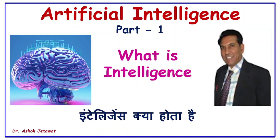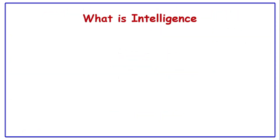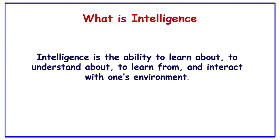Hello friends, today we will start one of the most important series of knowledge called Artificial Intelligence. This is an exciting field of computer science focused on creating intelligent machines capable of performing tasks typically requiring human intelligence. Before discussing Artificial Intelligence, let us see what intelligence is. Intelligence is generally seen as the ability to learn from experience and adjust to new situations. This includes acquiring knowledge, retaining it, and using it to solve problems.